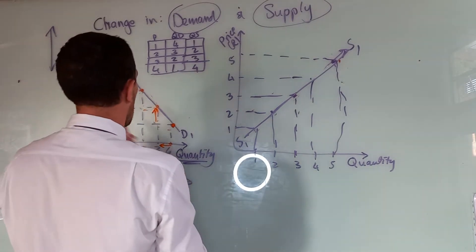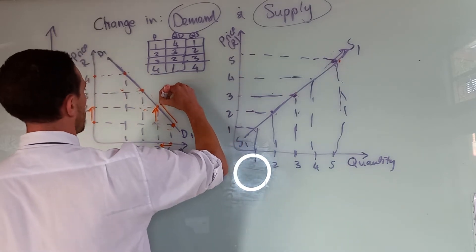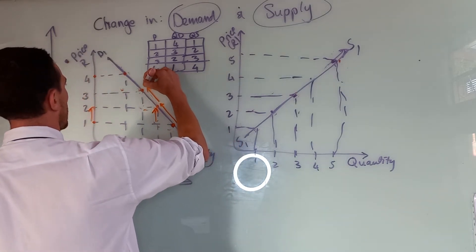So now there's an upward movement. There's a shift on my demand line. Can you see that? There's less of a demand.